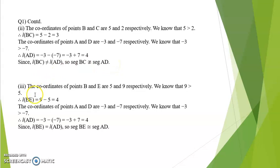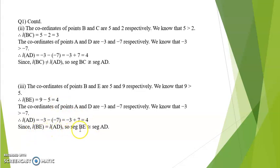Third, we find length BE and length AD. Coordinate of B is 5 and E is 9. Since 9 is greater than 5, length BE is 9 minus 5, which is 4. Coordinate of A is minus 3 and D is minus 7. Since minus 3 is greater than minus 7, length AD is minus 3 minus minus 7, equal to minus 3 plus 7, which is 4. Since length BE equals length AD, segment BE is congruent to segment AD.